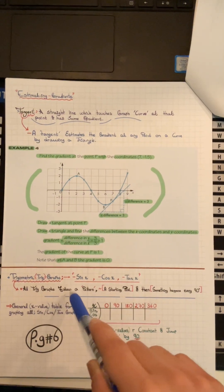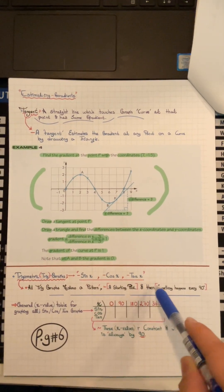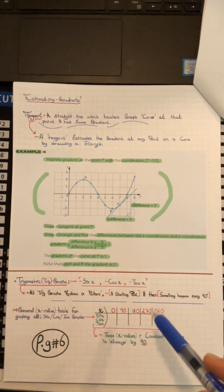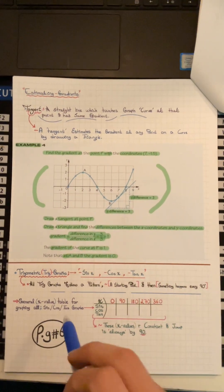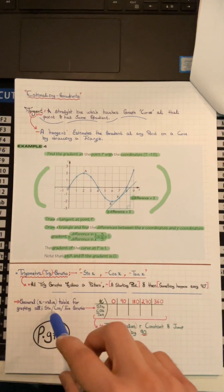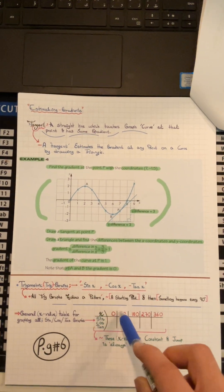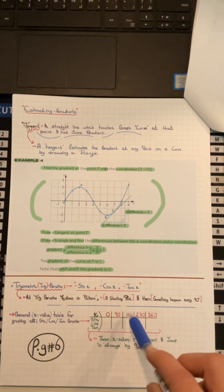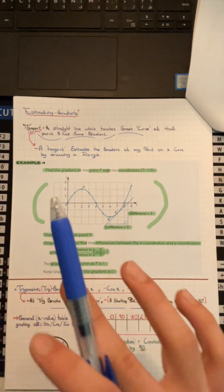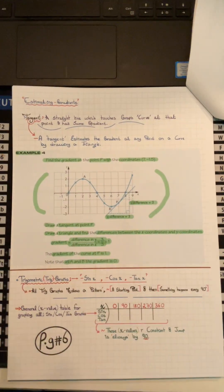All trig graphs follow a pattern — a starting point, and then something that happens at every 90 degrees. The general x-values table for graphing all the sin, cos, and tan graphs are 0, 90, 180, 270, and 360. This is the general x-value pattern that you're going to follow in graphing all of these graphs.